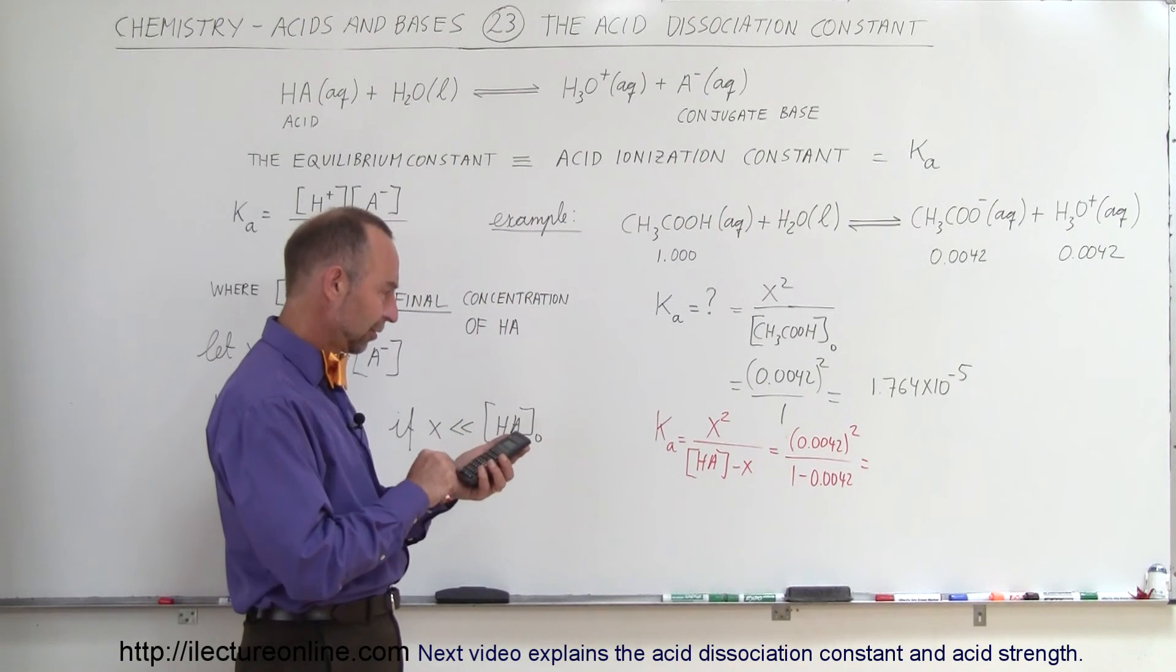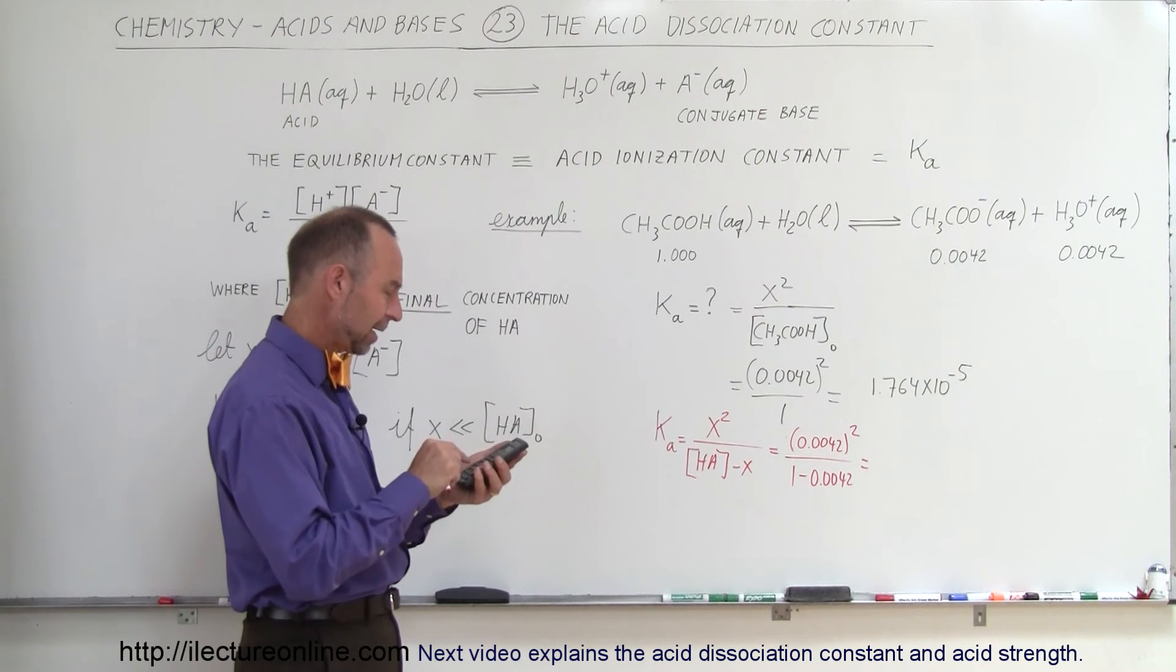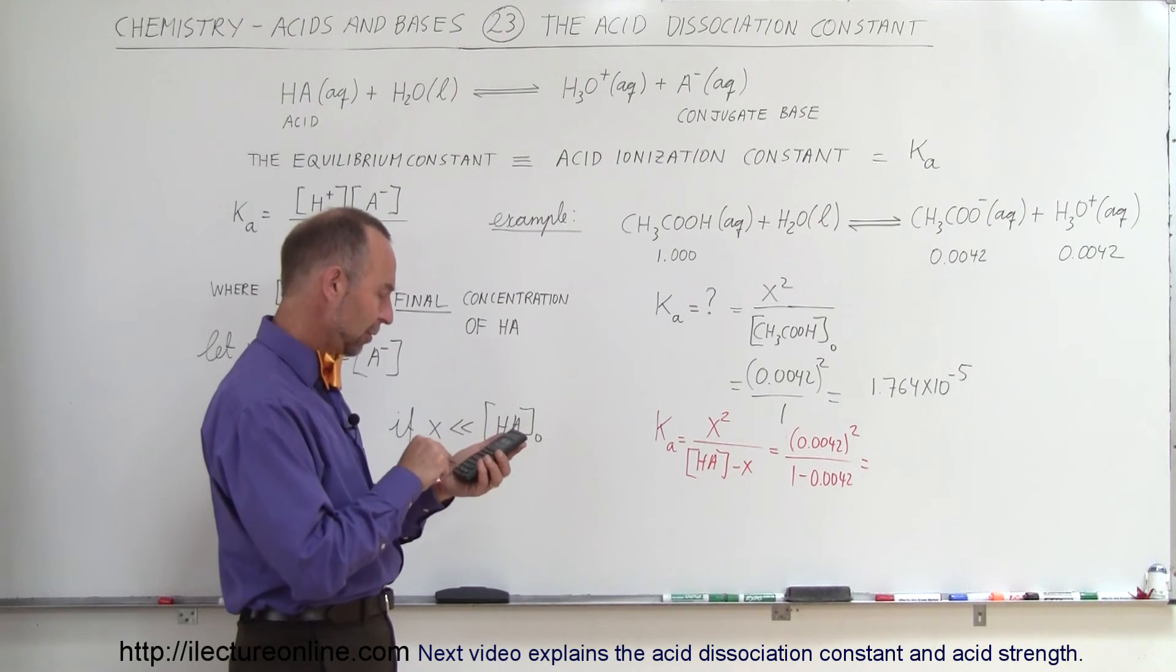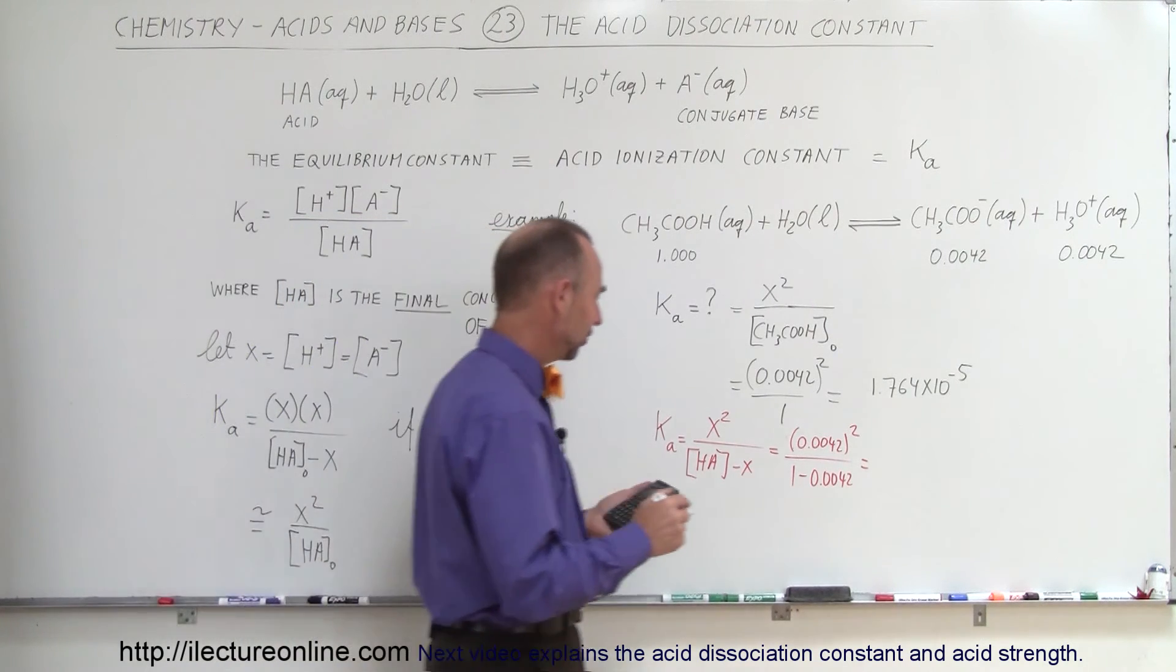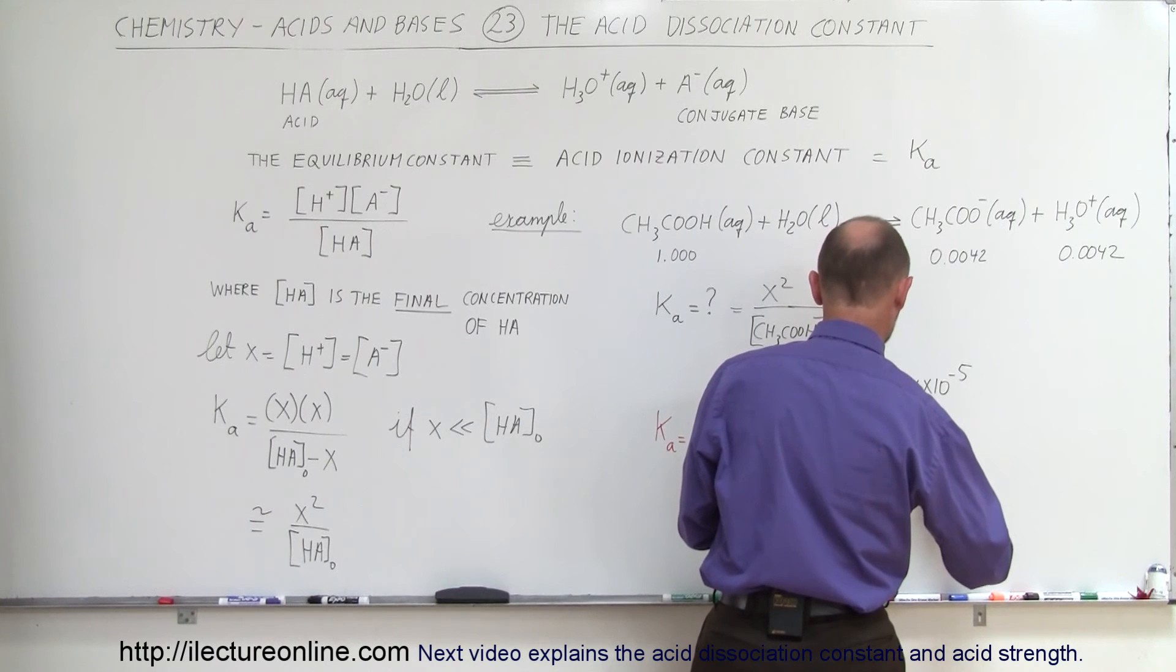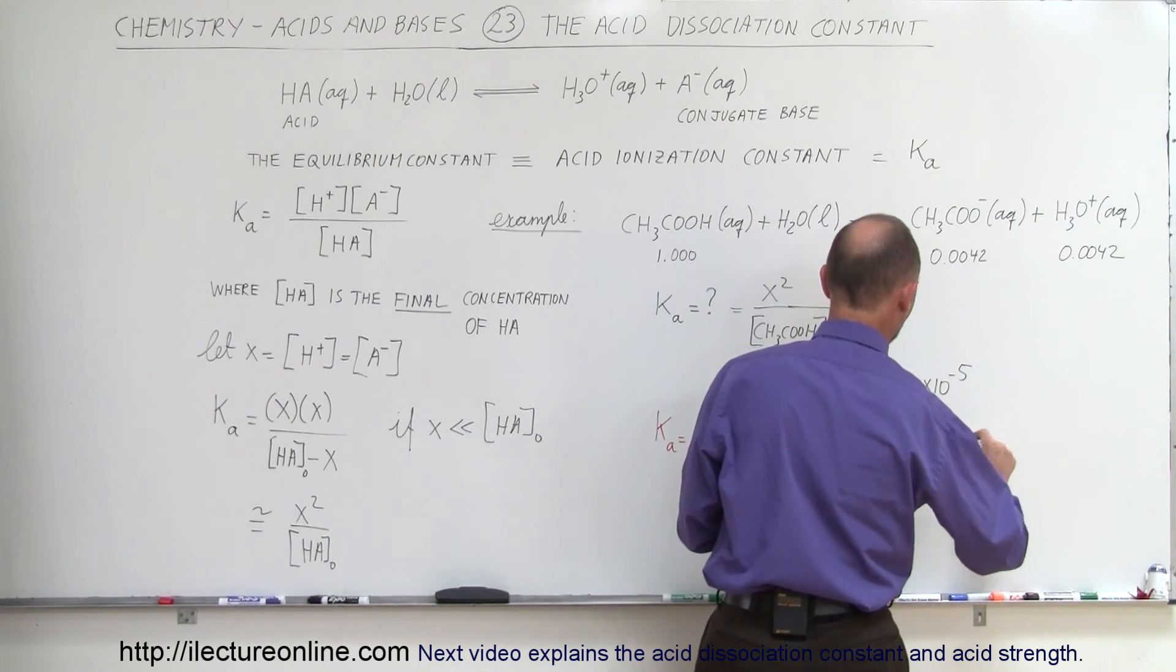So we get 0.0042, we have to square that, and we divide that by the quantity 1 minus 0.0042, and we would get this instead, we would get 1.771 times 10 to the minus 5.